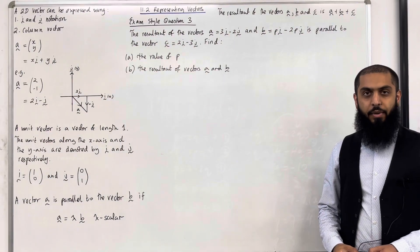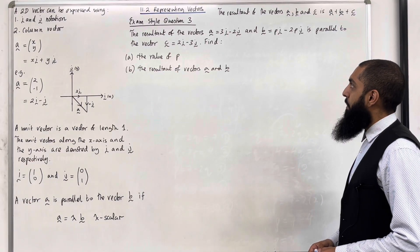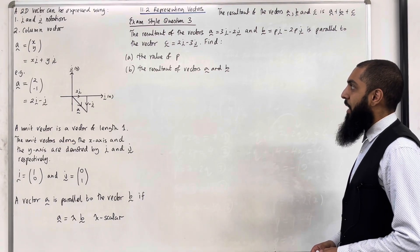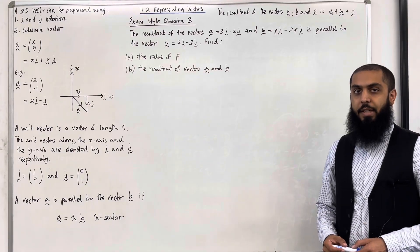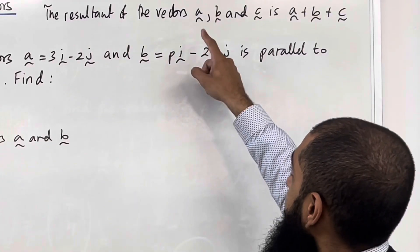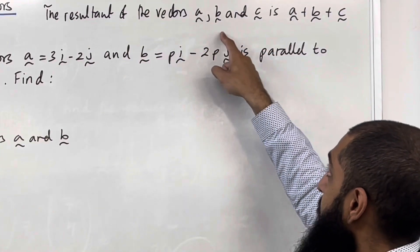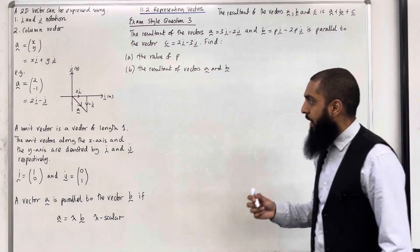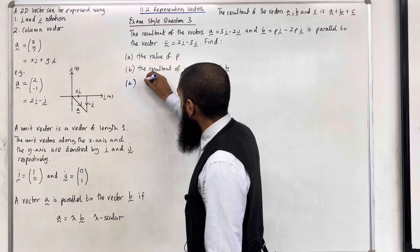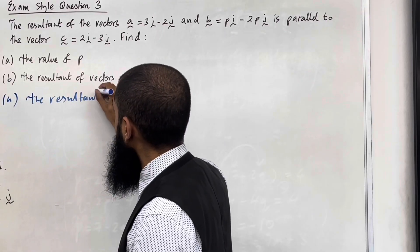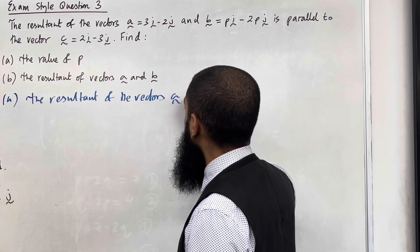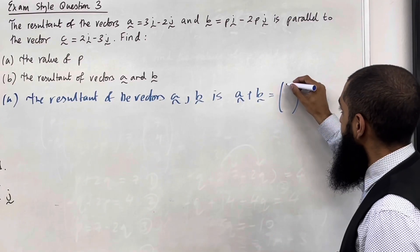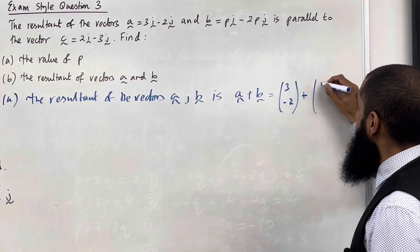Let's have a look at exam-style question 3. The resultant of the vectors A equals 3i minus 2j and B equals pi minus 2pj is parallel to the vector C equals 2i minus 3j. Find part A, the value of p. The resultant of vectors A and B is given by A plus B. A as a column vector is (3, -2) plus B as a column vector is (p, -2p).